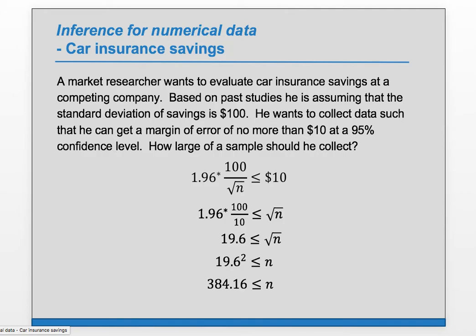But we want to make sure we answer the final question, which is how large of a sample should he collect? Because it has to be greater than or equal to this, we always have to round up. So rounding up, we get we should use a sample size n of 385.